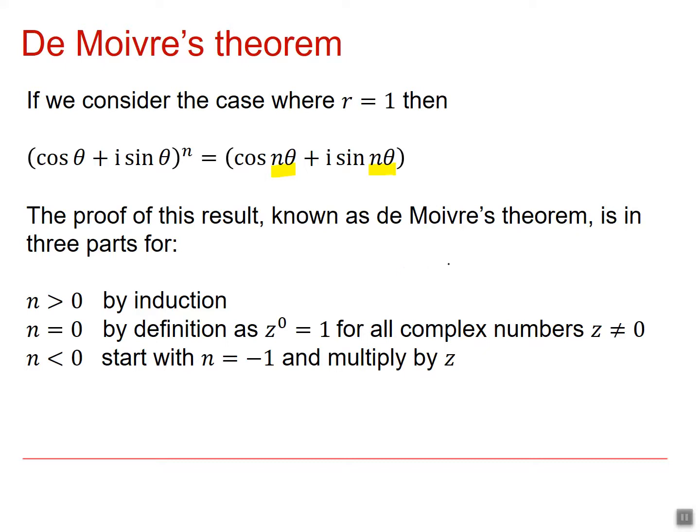The proof of this result, known as De Moivre's theorem, is in three parts: n is greater than 0, n equals 0, and n is less than 0. The proof is beyond the scope of this video, but you ought to look at your textbook for a detailed proof.